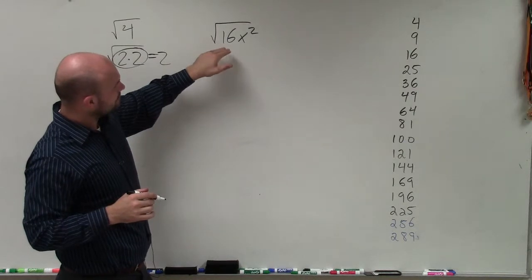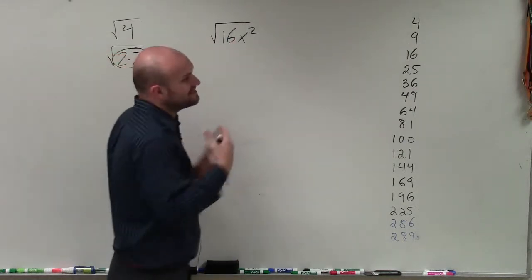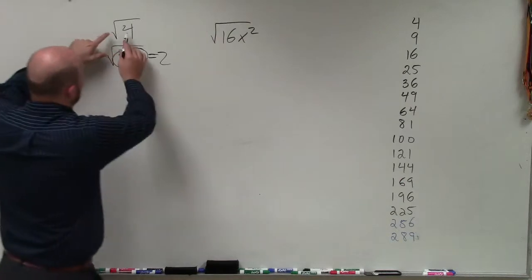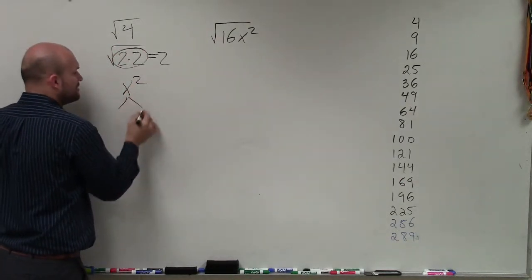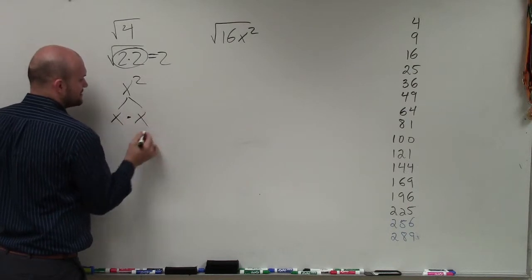Now, for variables, it's the exact same thing. We want to rewrite them. So I rewrite 4 as a product of its factors. Same thing with the variable x. I want to rewrite this as a product of its factors, x times x.